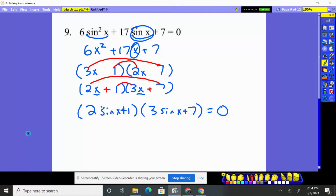And you can check. 2 sine of x times 3 sine of x is 6 sine squared of x. You have 2 times the 7 will be 14 sine of x plus the middle 3 will give you the 17. And 1 times 7 will give you that 7.